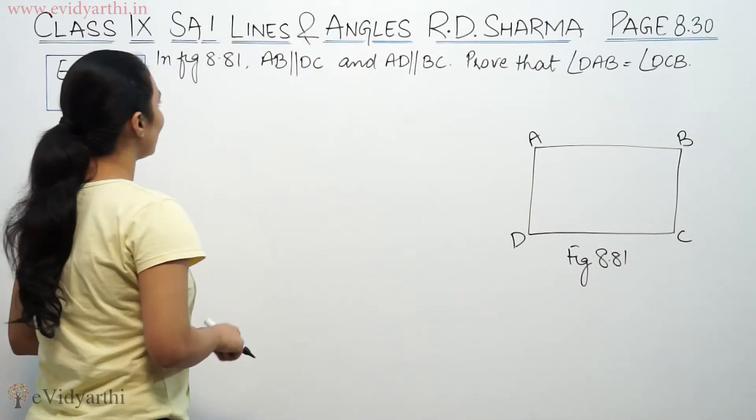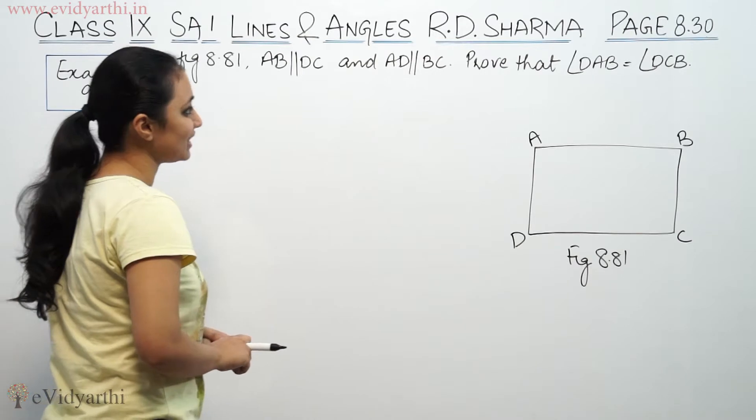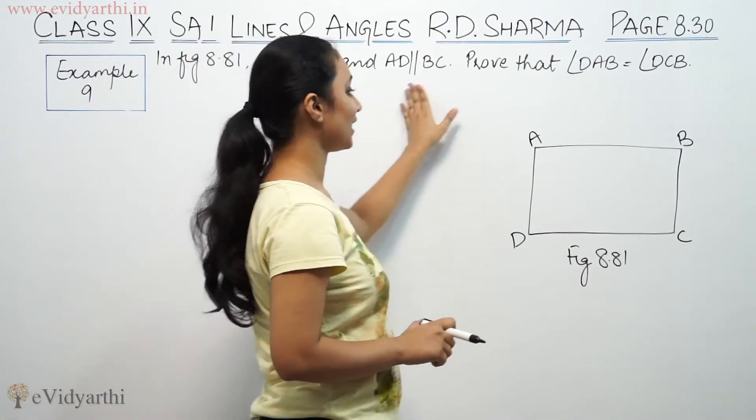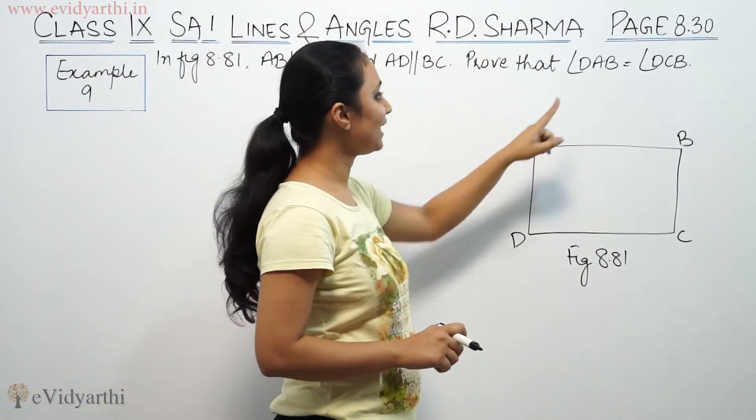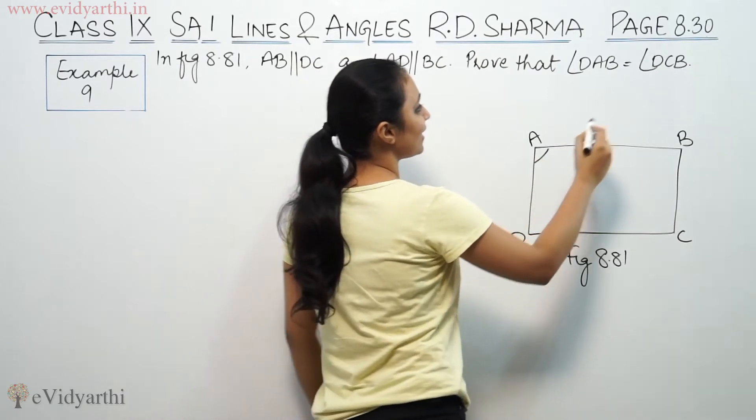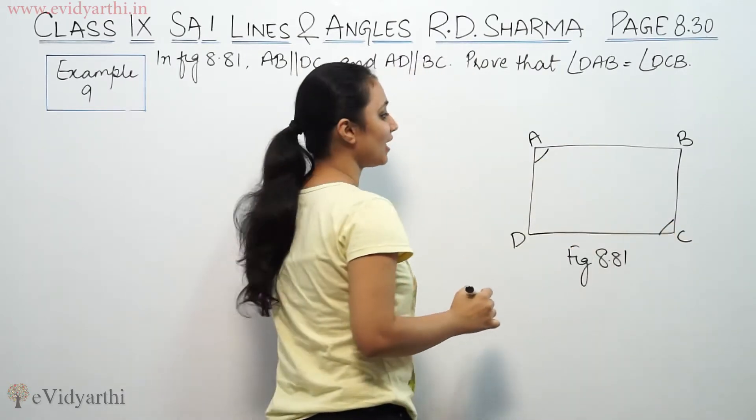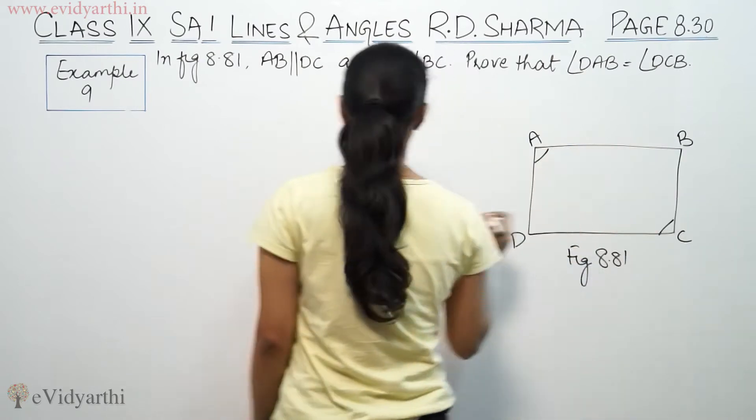This says in figure 8.81, AB is parallel to CD and AD is parallel to BC. Prove that angle DAB is equal to angle BCD. So first, AB and CD are parallel.